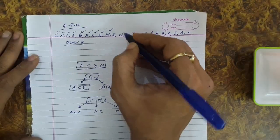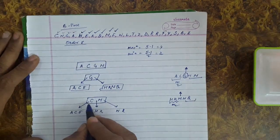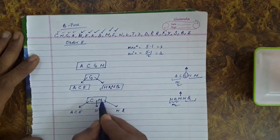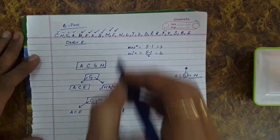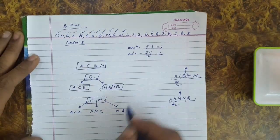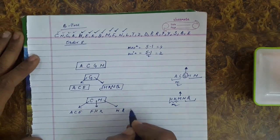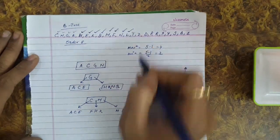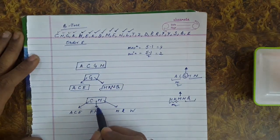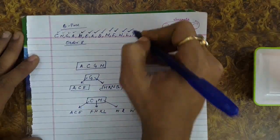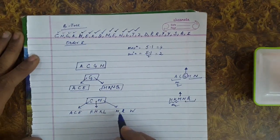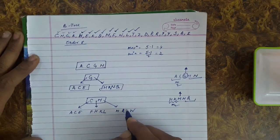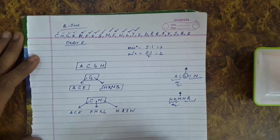Let us insert more keys. F is greater than C and less than M, so F will be inserted in the A, C, E node. W is greater than M, and J, K, L — L will come in the H, K node. Then T — greater than M; N, O, P, Q, R, S, T will come in the right subtree.